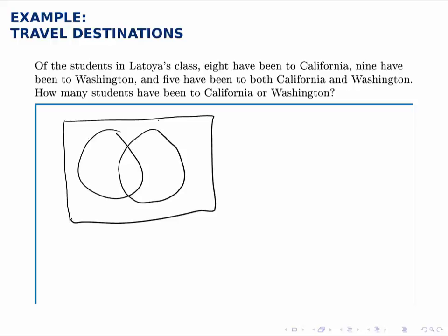Because there are two questions that are described in the survey. One is, have you been to California? And the other is, have you been to Washington? As many questions as there are is how many circles we need in this Venn diagram.